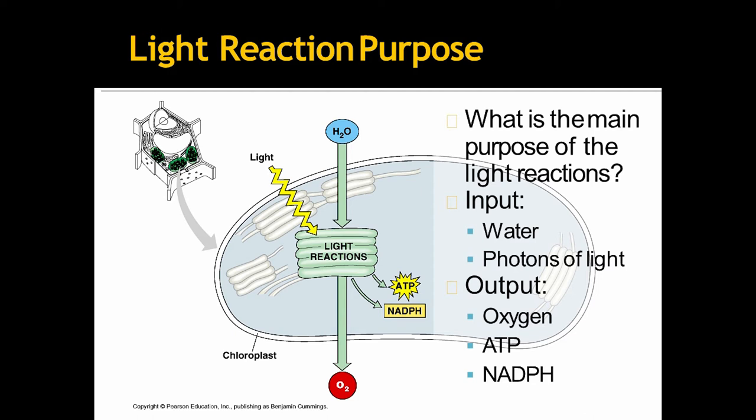So, what is the main purpose of the light reaction? Obviously, the input of water and photons of light to convert oxygen, ATP, NADPH. So, the production is this three molecules, oxygen, ATP and NADPH.